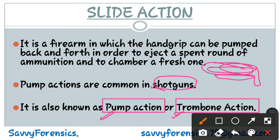Now if we talk about some pistols, in those pistols you can also see slide action. In pistols, the slider is present on the upper side of the barrel — attached above the barrel. So these are the two slider positions you can see: one on the pistol above the barrel, and the other on the shotgun below the barrel, attached via a rod.